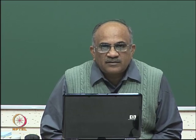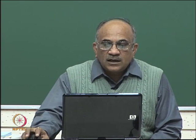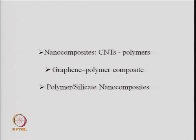Today we continue with the second and final lecture on nanocomposites. We will discuss composites made of carbon nanotubes and polymers. Carbon nanotubes, as discussed earlier in this course, can be of different kinds — single-walled or multi-walled — and they are nano in two dimensions. The third dimension can be very large: 5, 10, or 100 microns, whereas the other two dimensions, depending on the number of nanotubes in a bundle, can be a few nanometers to 20, 30, or 40 nanometers.